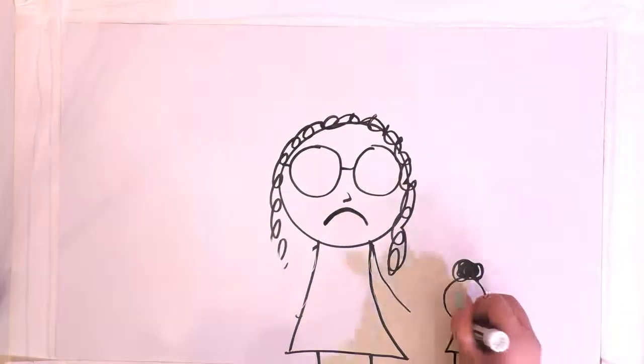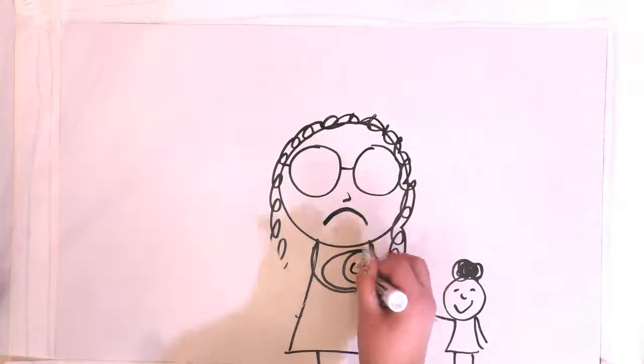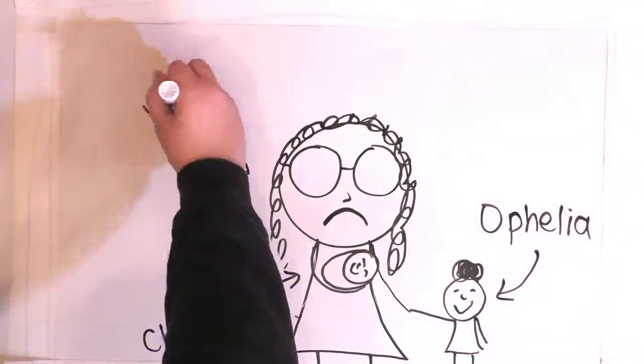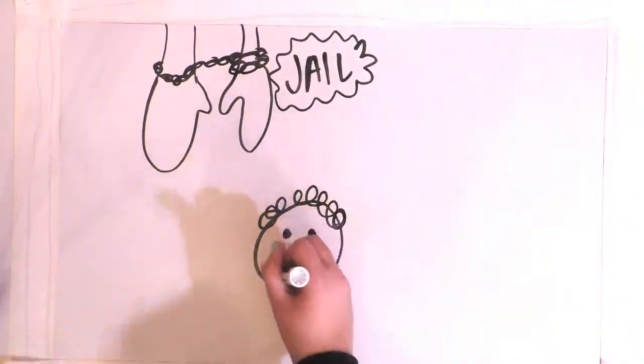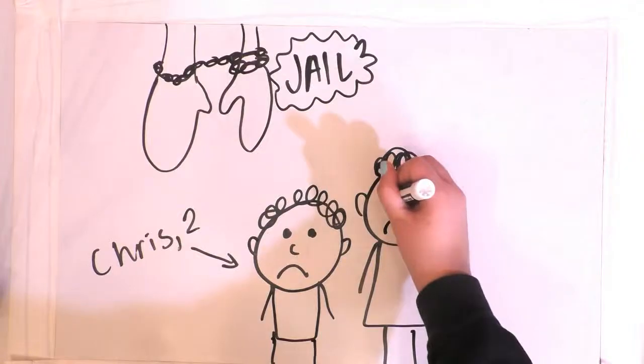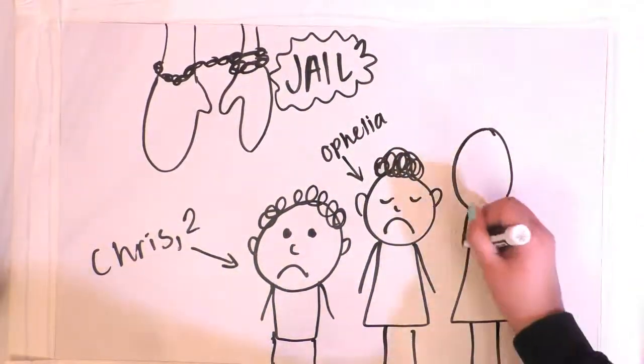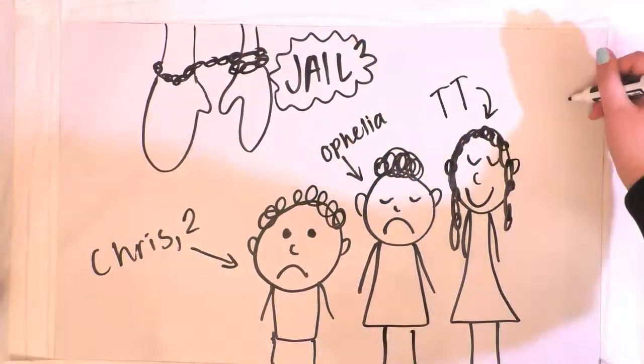Chris didn't know his father. He grew up with his mother and his sister. Eventually, when he was around two, his mother went to jail. He never knew why exactly, but he and Ophelia went to live with his uncle Archie and his wife, Titi. They treated them well, though lived by strict rules in the home and valued responsibility.